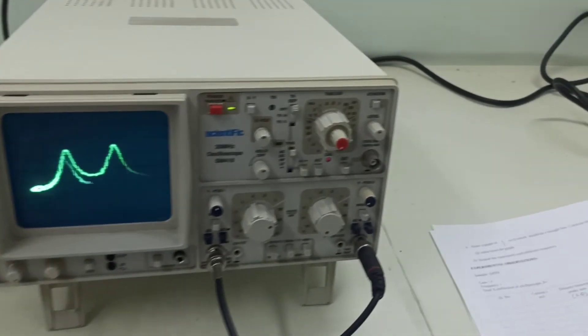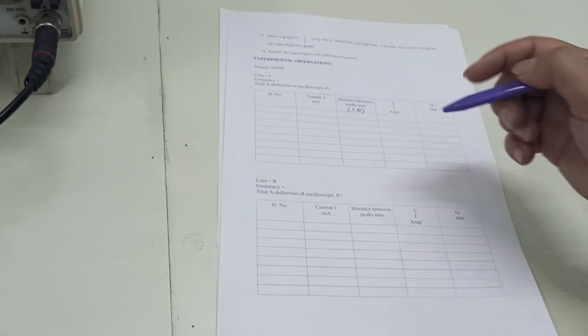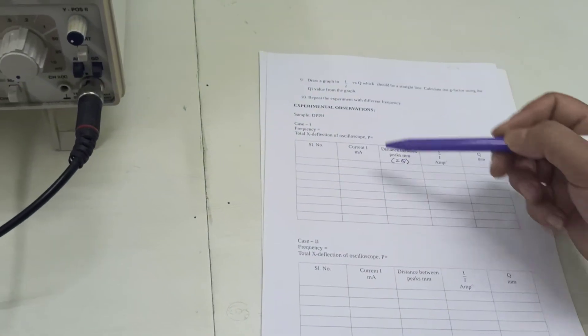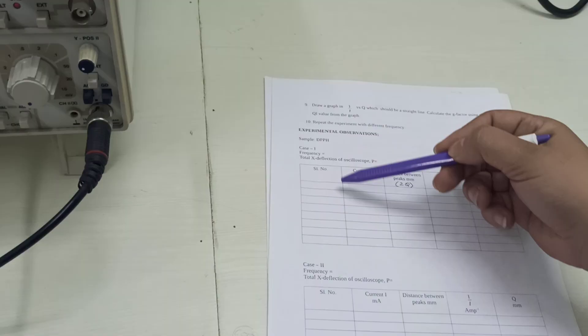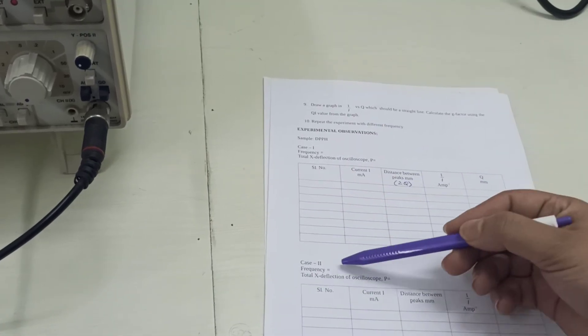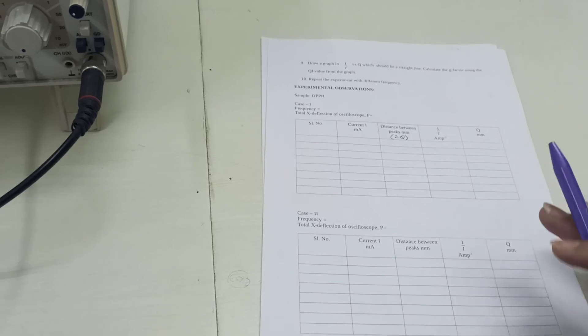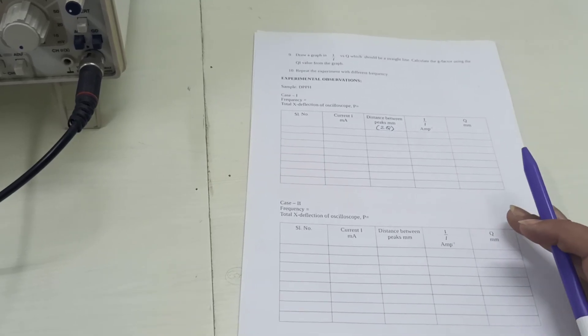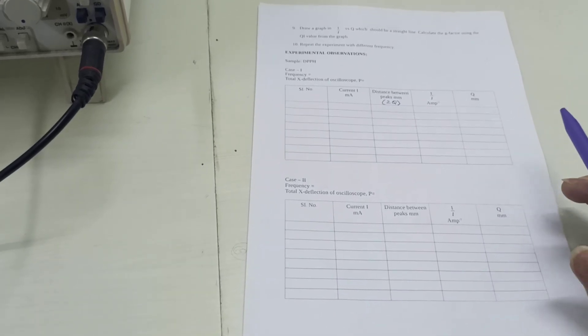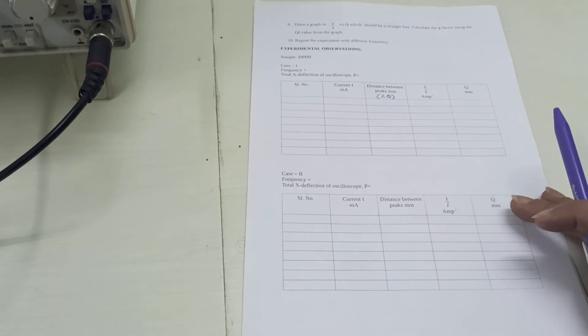What you need to do is you need to find, there are two different tables, two different cases. For a particular frequency, you perform one experiment, and for another frequency, you perform the similar thing. That will be done in your ESR experiment by making use of which we will be finding your Landi g-factor.